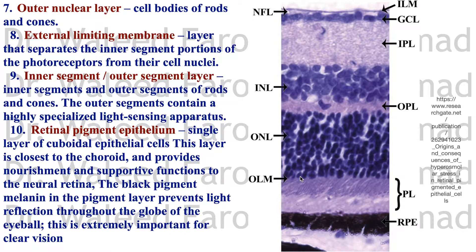The inner segment and outer segment layer — the photoreceptor layer of the rods and cones. The outer segments contain a highly specialized light-sensing apparatus. And last, the retinal pigment epithelium, which is a single layer of cuboidal cells loaded with melanin, closest to the choroid on the outside.